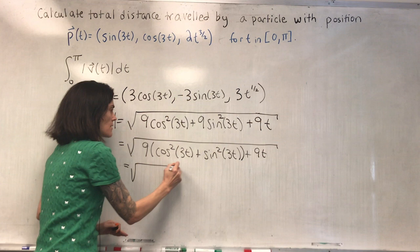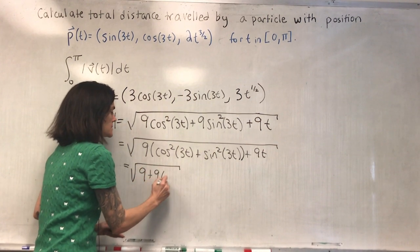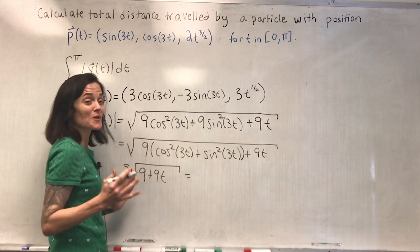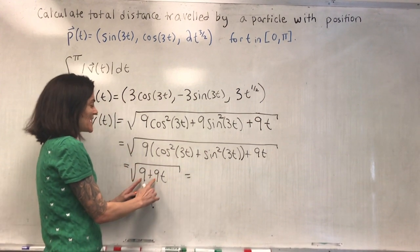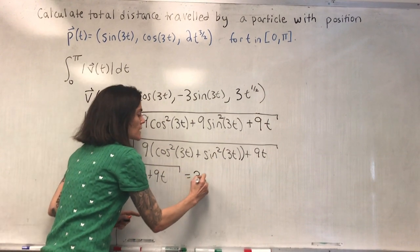I can pull out a nine from the first because I'm going to use the fact that cosine squared plus sine squared is one. And here we have, this is the square root of nine plus nine t. I can actually do one more thing. Because if I pull a nine outside the square root, I get this.